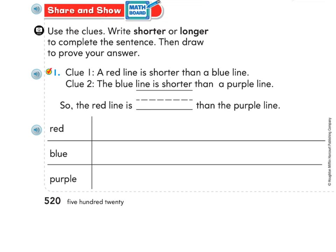Down below it says: use the clues, write shorter or longer to complete the sentence, then draw to prove your answer. Clue one: a red line is shorter than a blue line. I think it's easier to draw first and then complete the sentence. So draw a red line that is shorter than a blue line. Then move on to clue number two: the blue line is shorter than a purple line.